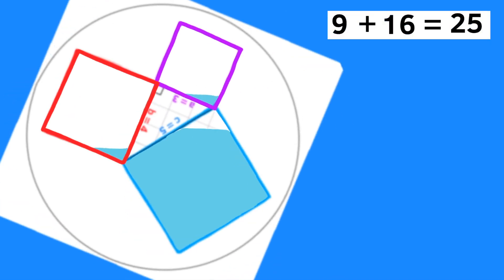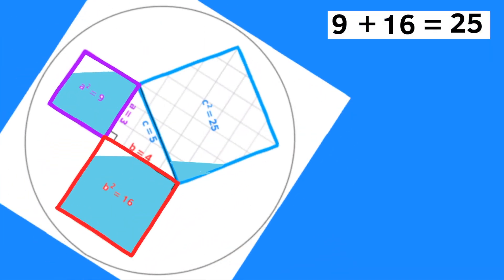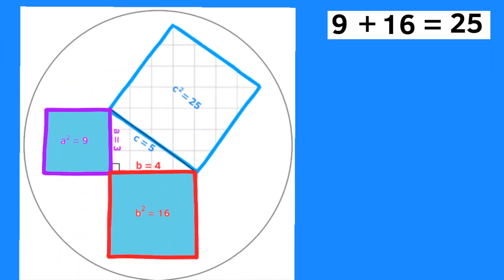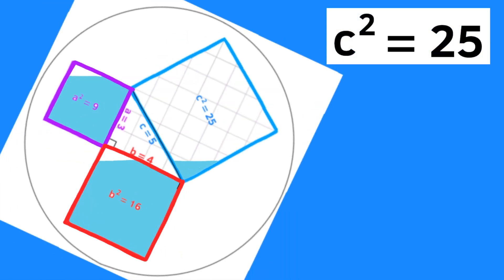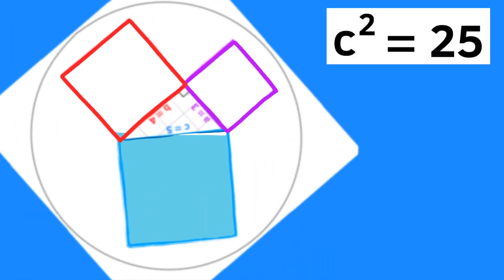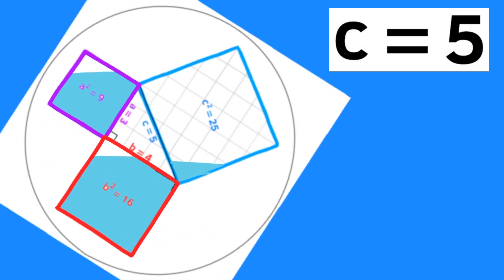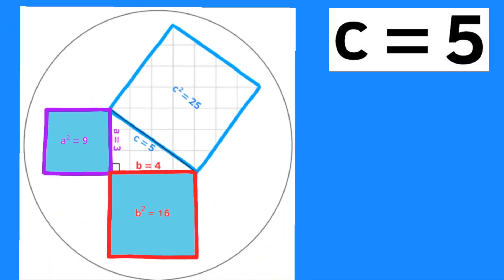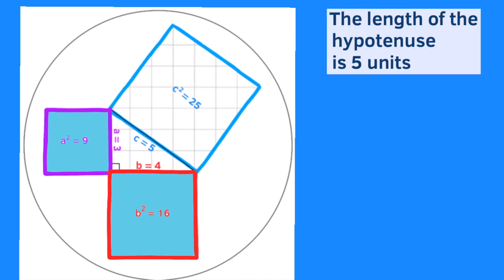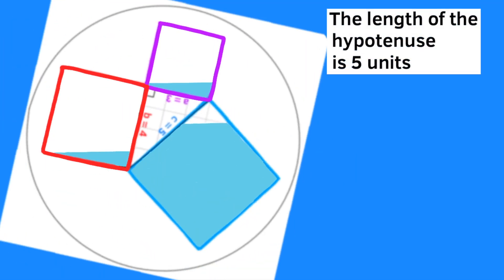9 plus 16 equals 25. C squared equals 25, so C equals 5. The length of the hypotenuse is 5 units.